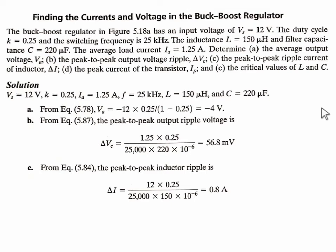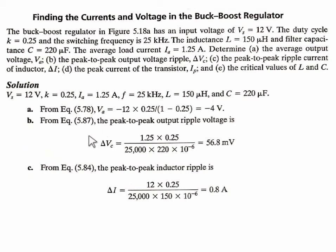A buck-boost regulator example: input voltage Vs = 12 V, duty cycle K = 0.25 (less than 0.5, so it acts as a buck converter), switching frequency = 25 kHz, inductance = 150 µH, capacitance = 220 µF, load current = 1.25 A. The average output voltage Va = -Vs·K/(1-K) = -12 × 0.25/0.75 = -4 V, which is less than the input voltage.